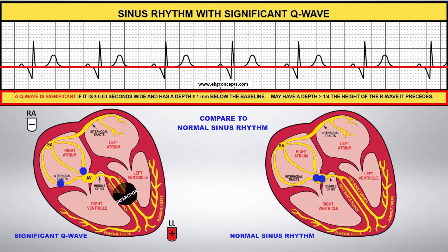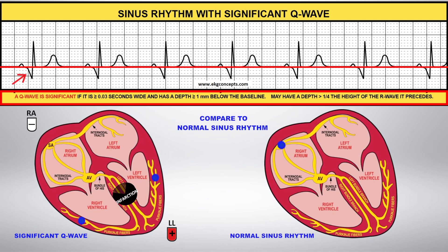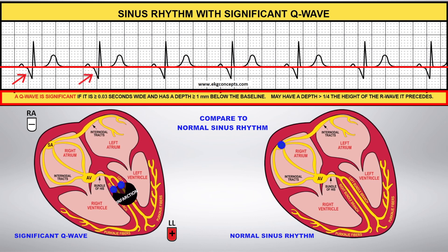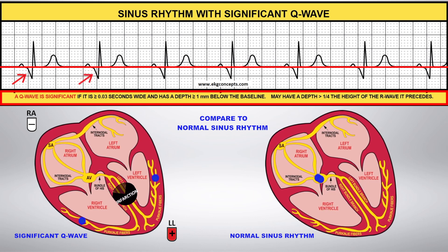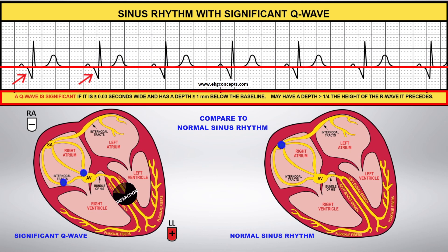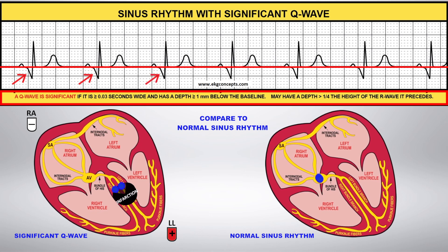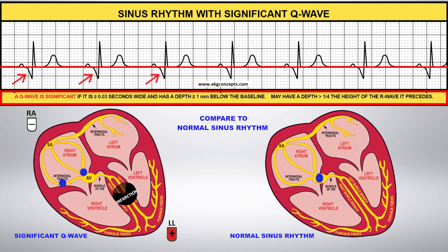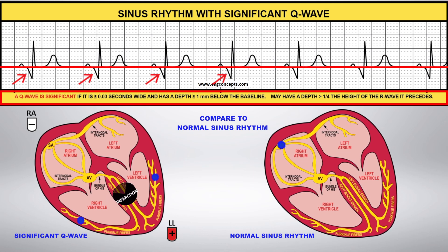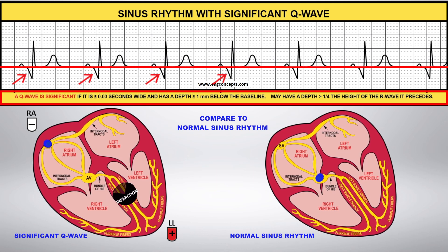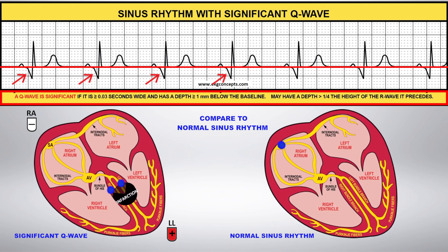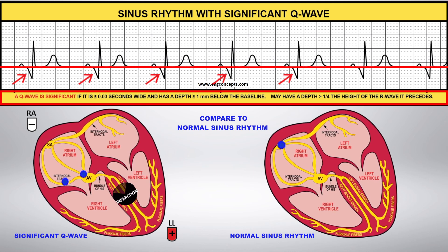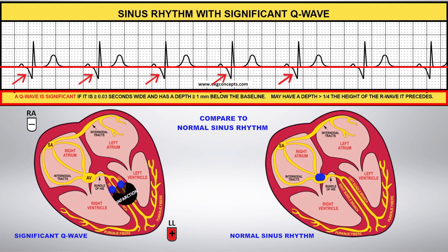Significant Q waves can indicate a current or a previous myocardial infarction. If the Q wave indicates a previous myocardial infarction, it is because the electrical impulse cannot get through the scar or the dead heart muscle tissue. A small Q wave represents normal left-to-right depolarization of the interventricular septum.